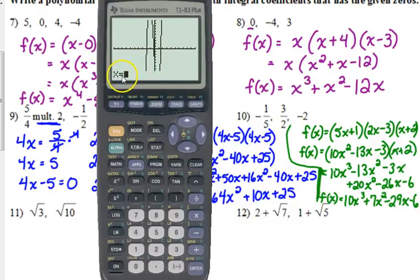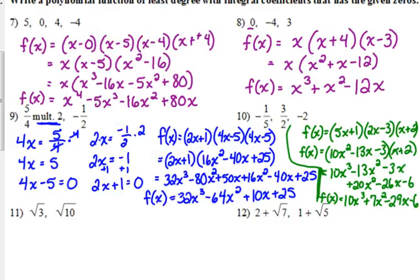I can type in negative one-fifth and it should give me zero. And I can just keep typing in as long as I don't press clear. It'll just keep popping up. Three-halves, it gives me zero. Negative two, it gives me zero. So that's another way you can check this.